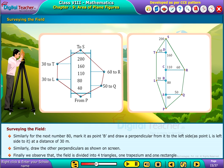Finally, we observe that the field is divided into four triangles, one trapezium and one rectangle.